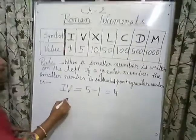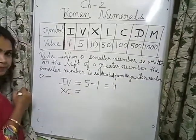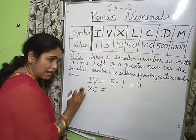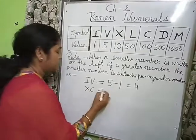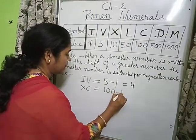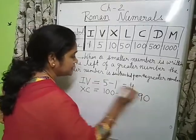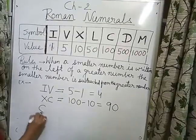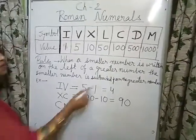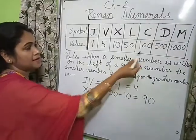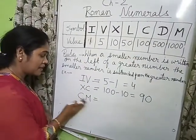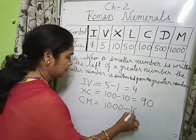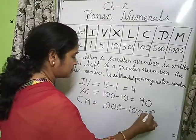Similarly, if we write XC: C is the greater number (100) and X is the smaller number (10) written on the left side. So we calculate 100 minus 10, which equals 90. If we write CM: M is 1000 and C is 100, the smaller number is on the left side of the greater, so subtraction applies — 1000 minus 100 equals 900.